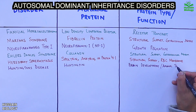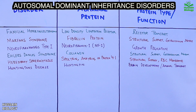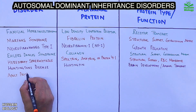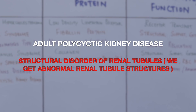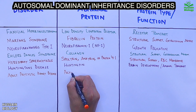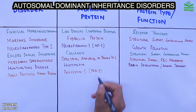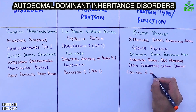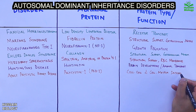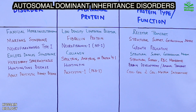Finally, among autosomal dominant disorders, we have adult polycystic kidney disease, where there is abnormality in renal tubules. The abnormal protein involved is polycystin, which under normal conditions is responsible for cell-cell interactions and cell-to-matrix interactions.